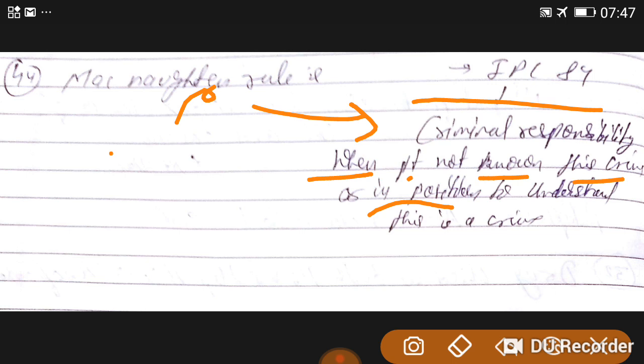If someone does something bad or commits some criminal activity, but the position of his mind is not stable, he is not psychologically fit during that time, he doesn't understand what is right and what is wrong.